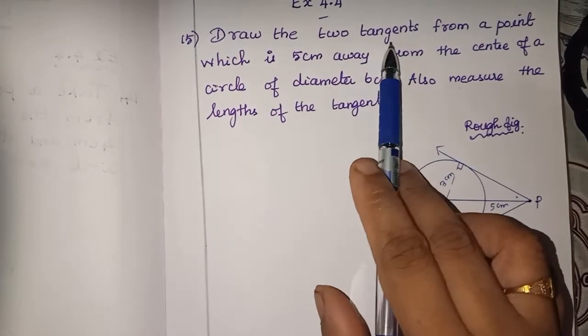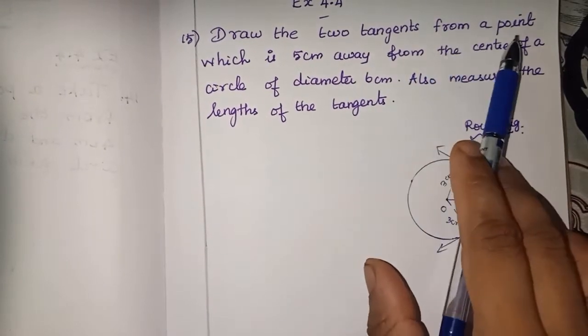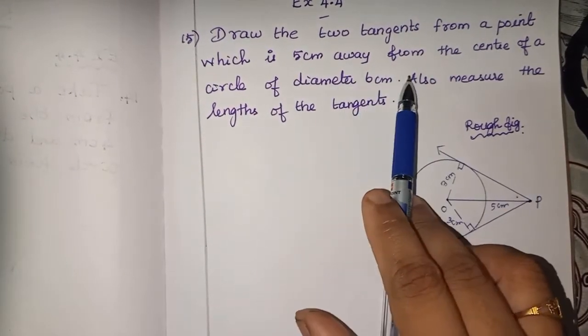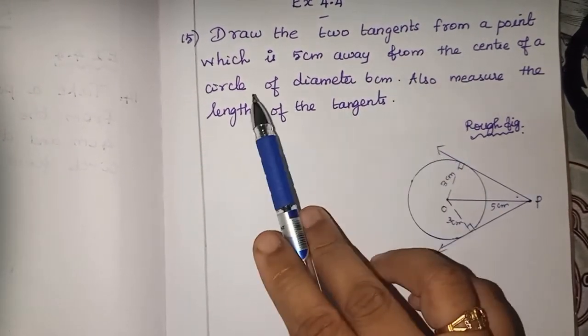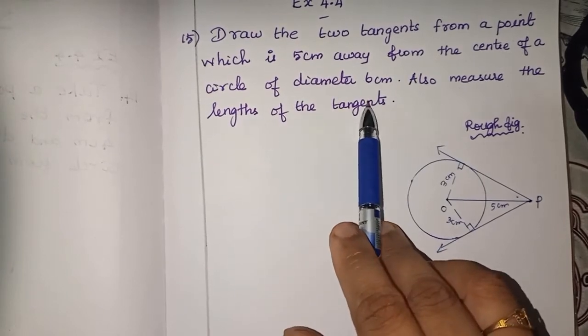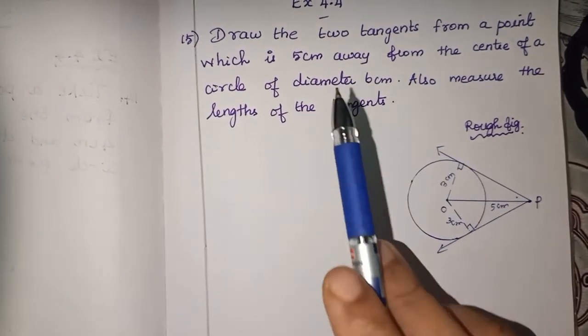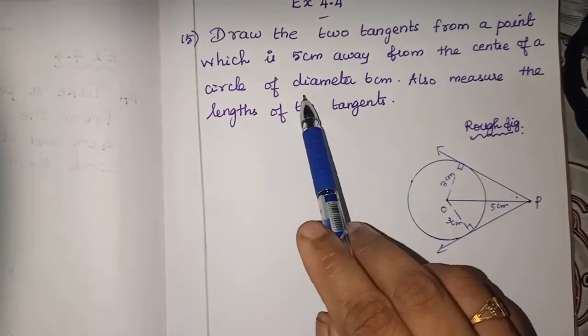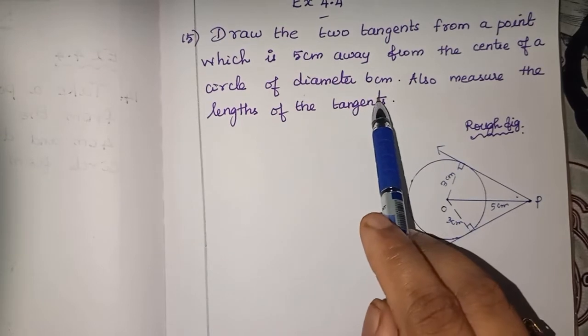Draw the two tangents from a point which is 5 cm away from the center of a circle of diameter 6 cm. So, be very very careful when you are going to do this. Diameter is given.